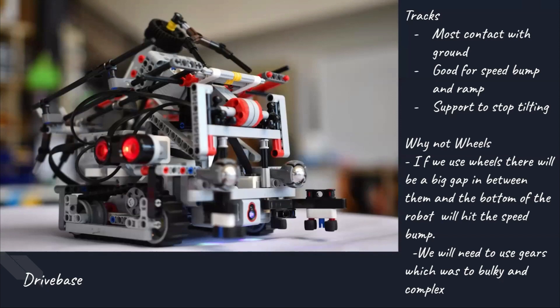We also had a problem with the tracks tilting in the beginning. To stop this, we added a support on the outside. We did not use wheels as there will be a big gap between the wheels and the bottom of the robot. We will hit the speed bumps. We will need to use gears which was too bulky and complex to build.